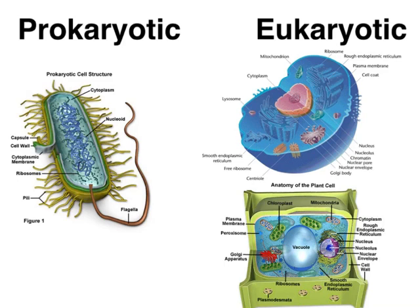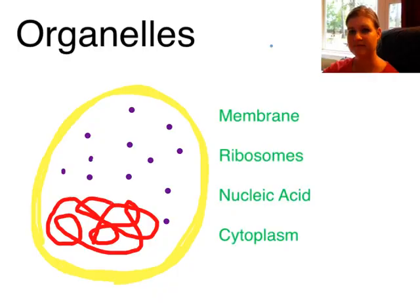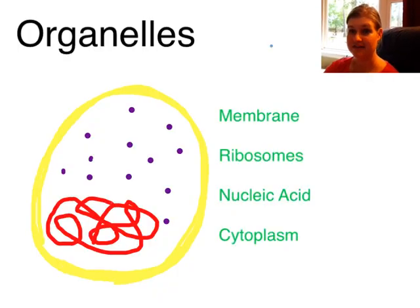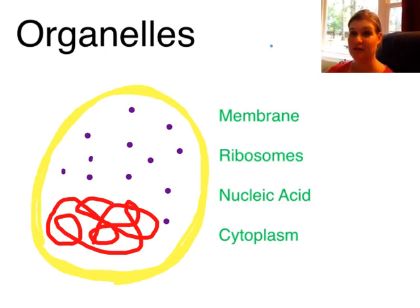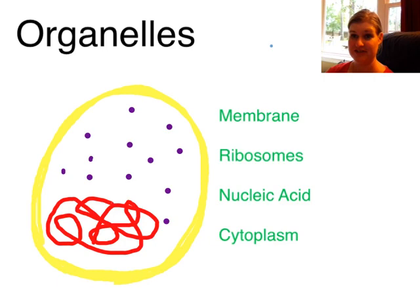Eukaryotic cells can be further broken down into more categories; the most common are plants and animals. Although there are many different types of cells, all cells at least have the same basic parts, and we call them organelles, which means little organs. So just like you have organs in your body — your heart and your liver — all your cells have little organs too.